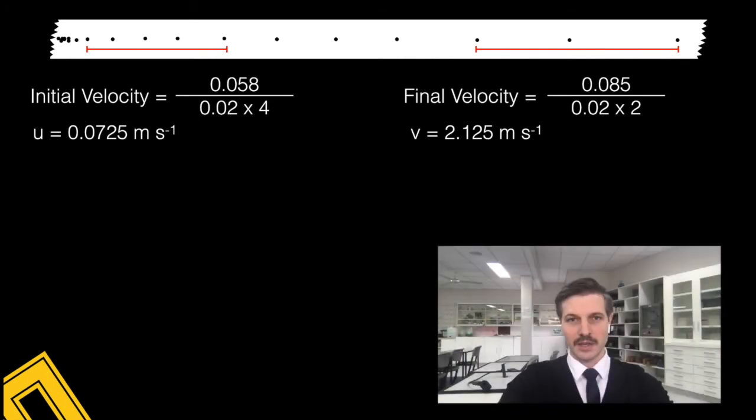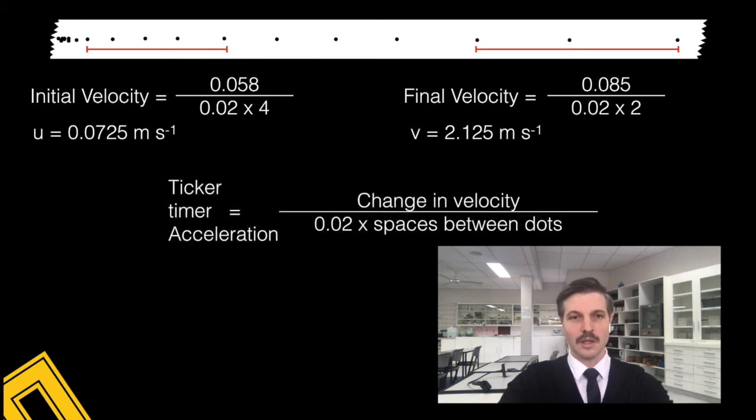Now I can apply this to my acceleration formula, but I need to know the total time between all those dots. So I choose my first dot and my last dot and I count how many intervals there are. Acceleration is change in velocity over time, so the change in velocity was final velocity 2.1 minus 0.07, and there were 10 intervals. So I get a final acceleration of 10.15 meters per second squared.